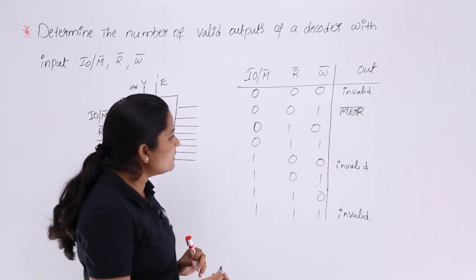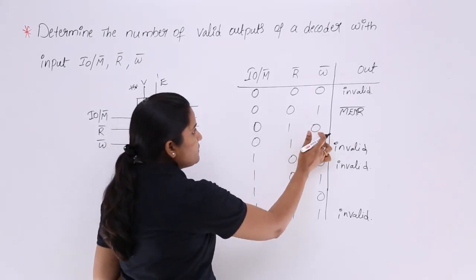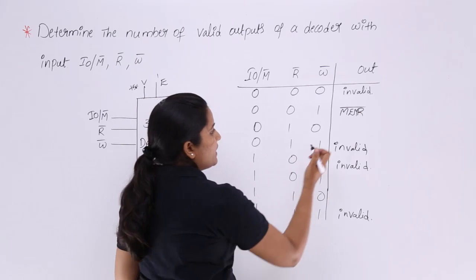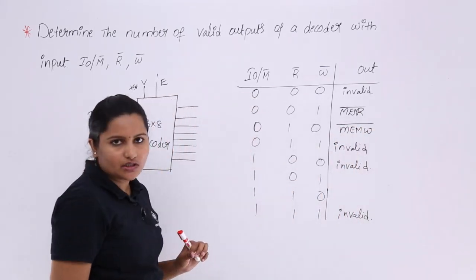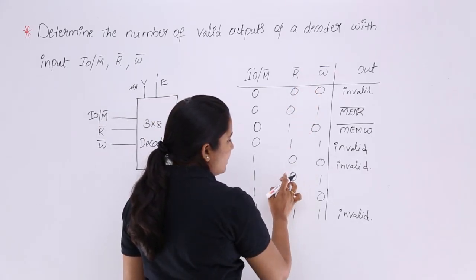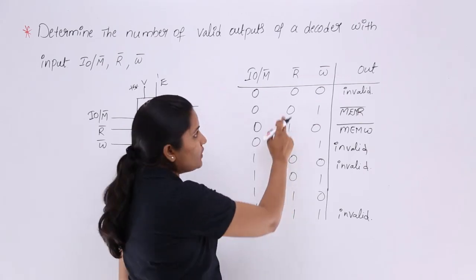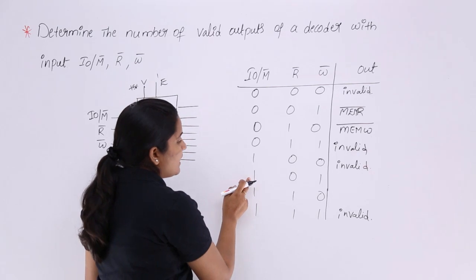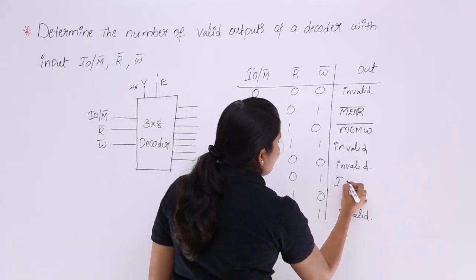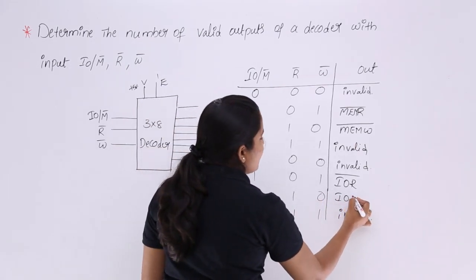For combination 010 — R=1 and W=0, so this is a write operation, and M=0 activates memory. This is a memory write operation — MEMW. For combination 100 — R=0 activates read, and M=1 activates I/O. This is an I/O read operation — IOR. For combination 101 — W=0 activates write, and M=1 activates I/O. This is an I/O write operation — IOW.